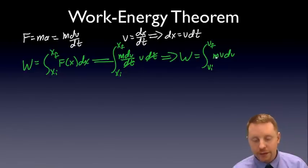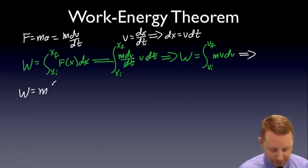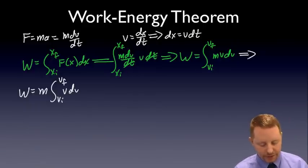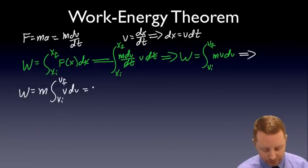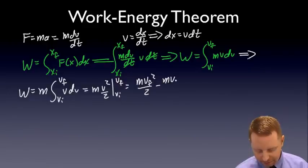Now, next step. Notice that mass is a constant in this problem. We can pull that out of the integral sign. Therefore, work equals m integral from v initial to v final of v dv. The integral of v is going to be v squared over 2. So that's going to be m v squared over 2 evaluated from vi to vf or m v final squared over 2 minus m v initial squared over 2.